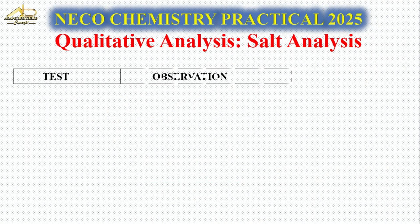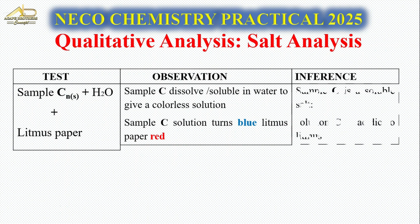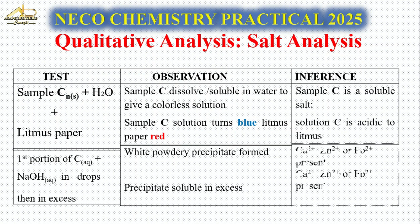Now let's look at how to do your table - test, observation, and inference. If you are asked to dissolve sample C, which is Pb(NO₃)₂, dissolve it in water. It will dissolve and give you a colorless solution. Your inference is that sample C is a soluble salt.